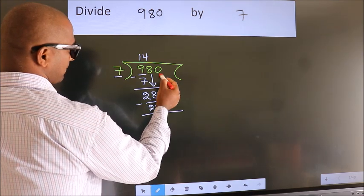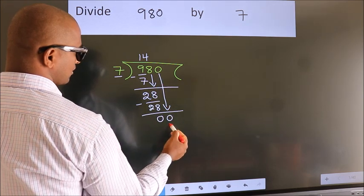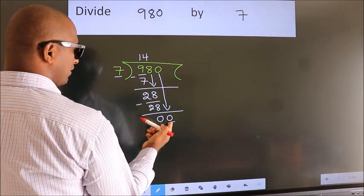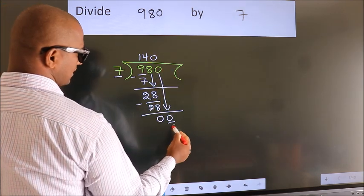After this, bring down the beside number. So 0 down. So 0. When do we get 0 in the 7 table? 7 times 0 equals 0.